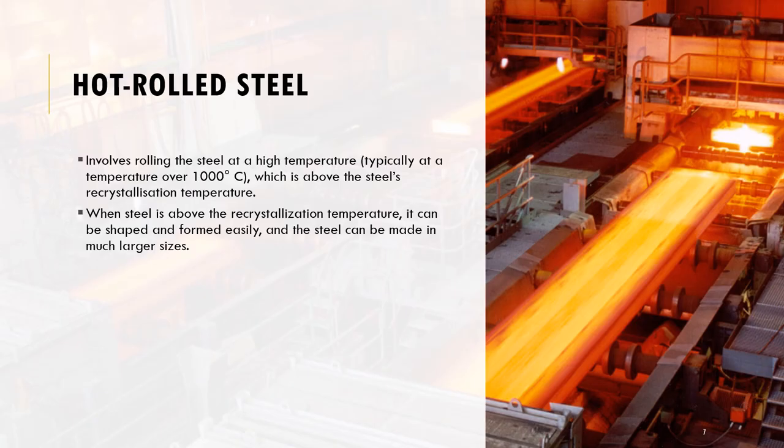Hot rolled steel is the most common type you see in buildings. It's basically steel that's formed by rolling steel elements at very high temperatures — approximately 1500 degrees Celsius. The reason such temperatures are chosen is because above this threshold the steel is above its recrystallization temperature, so it can easily be molded into different shapes and sections.